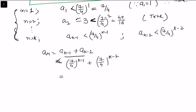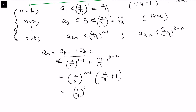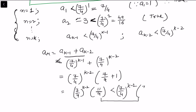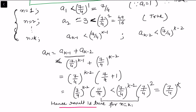Taking (7/4)^(k−2) as a common factor, we get (7/4)^(k−2) times (7/4 plus 1), which equals (7/4)^(k−2) times 11/4. Since 11/4 is strictly less than (7/4)², this becomes strictly less than (7/4)^(k−2) times (7/4)² equals (7/4)^k. Hence the result is true for n equals k, and the proof is complete.